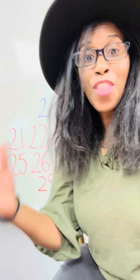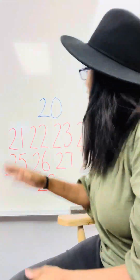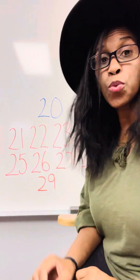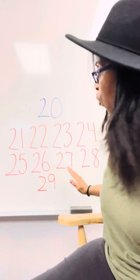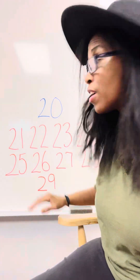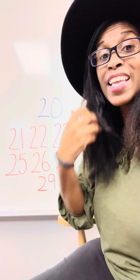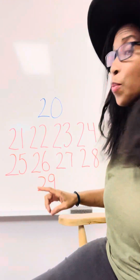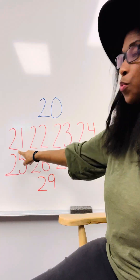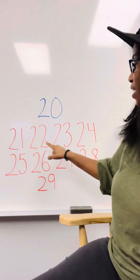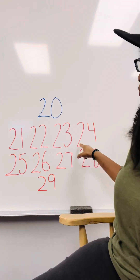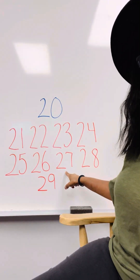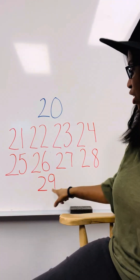Very good! Thank you for counting those numbers with me. Now we are going to start over again with number 20 all the way to 29, and we're going to say it all at one time. Remember, the 2 goes in the front. Are you ready? Here we go: 20, 21, 22, 23, 24, 25, 26, 27, 28, 29.